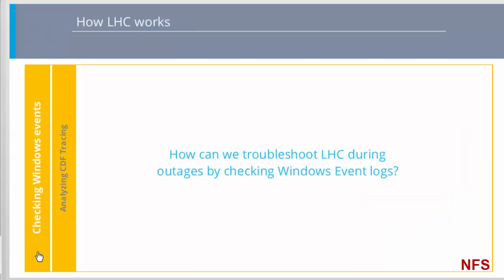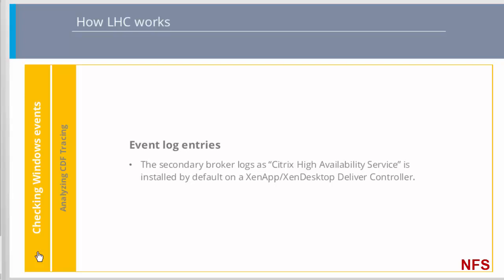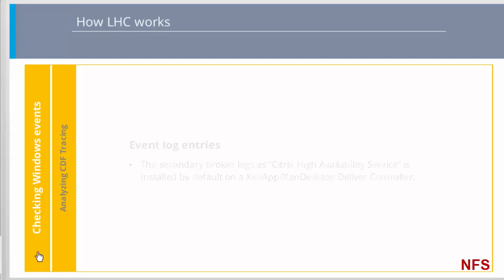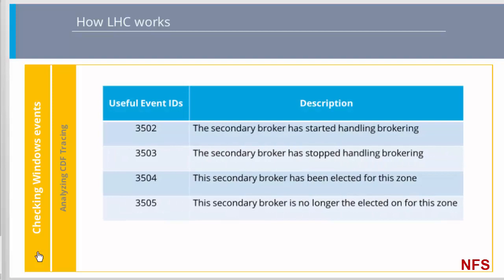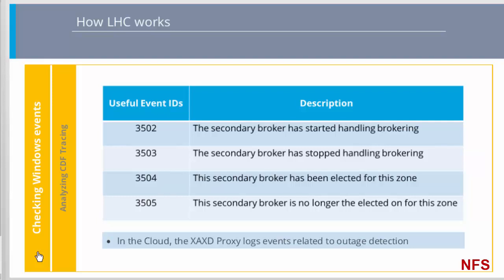How can we troubleshoot LHC during outages by checking Windows event logs? During outages, we may need to prove that the secondary broker has taken over the brokering role from the primary. The Citrix High Availability Service, the LHC service, is installed by default on a XenApp XenDesktop delivery controller. The event logs will show brokering entries from both the primary during normal operations and from the secondary broker during outages, but only the secondary broker logs its event source as Citrix High Availability Service. Here we also see typical Windows event entries that are logged during the transition from normal operations to outage mode and back to normal mode. In the cloud, the XenApp XenDesktop proxy also logs events. You will be able to see whether the proxy, as a secondary broker, is currently brokering or whether the delivery controller in the Citrix cloud-based control plane is brokering and why.